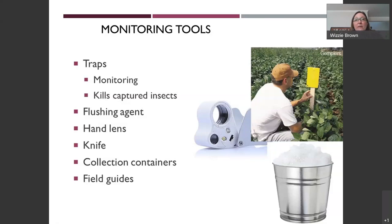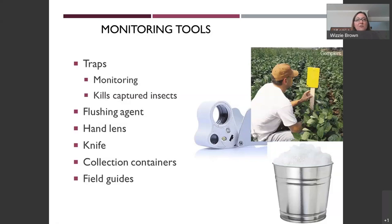Another idea is flushing agents — a simple one is soapy water, which can irritate the exoskeleton of turf insects and bring them to the surface. A hand lens is also very useful since many insects are very small. Your phone also has a great zoom capability and can be used to take photos for identification. You can also try to identify them yourself using collection containers, field guides, or internet websites.